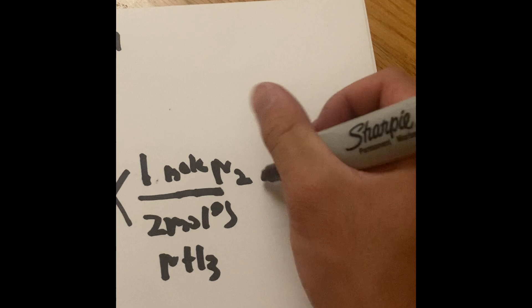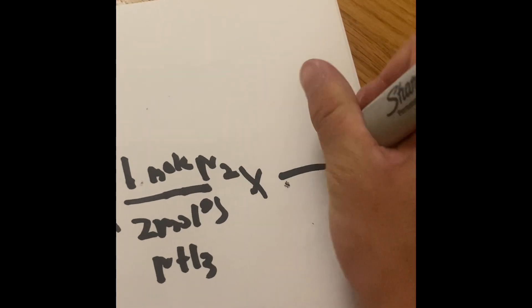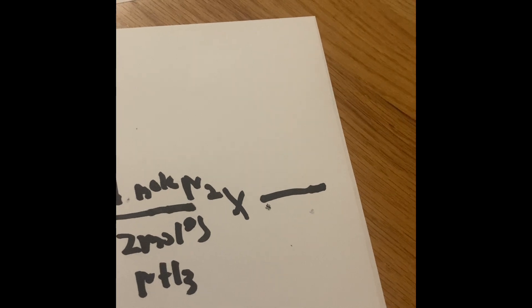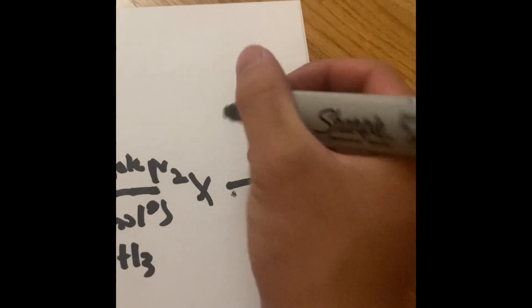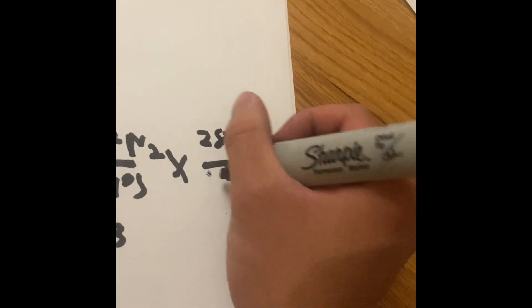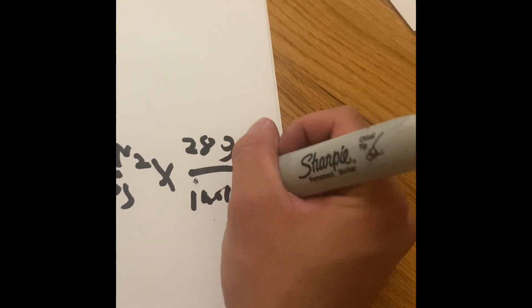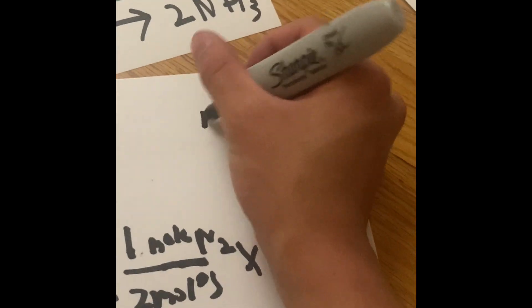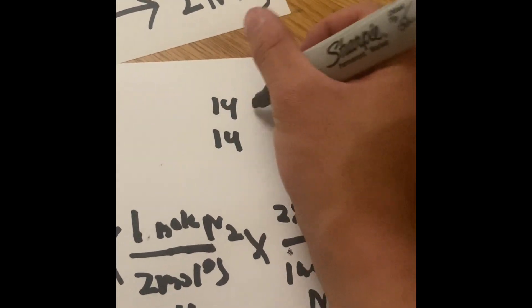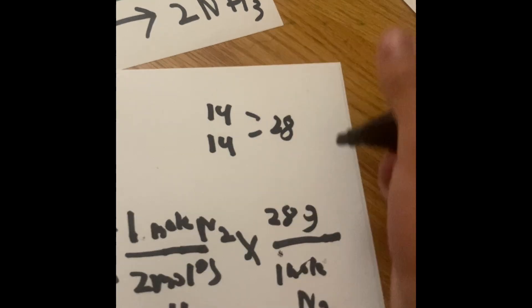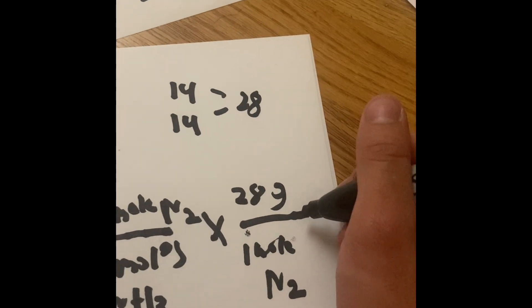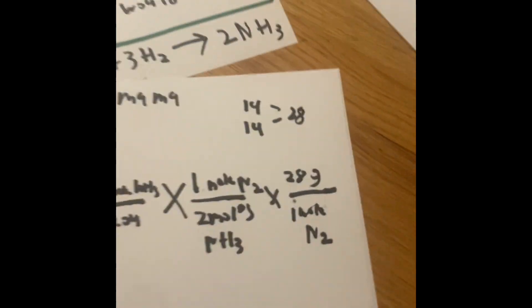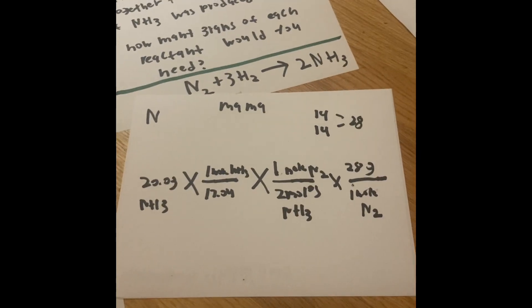Multiply that again by the molar mass for nitrogen, and we are going to put 28 grams on the top, and put one mole of N2 on the bottom, because one nitrogen is 14, and another one is 28. So that is how we got 28 grams, divided by one mole of nitrogen. So what are the answers to these?